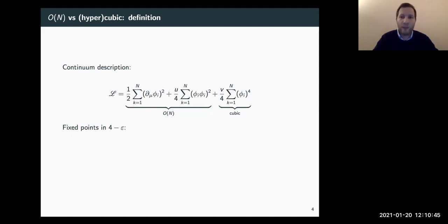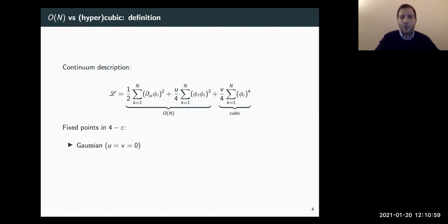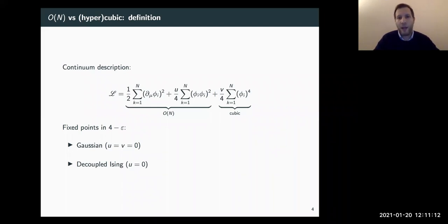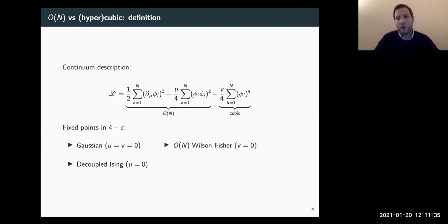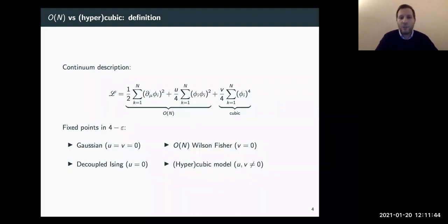If you go to a continuum limit or want to describe a quantum field theory in the same universality class, you write a Lagrangian with the usual O(N) Lagrangian plus a cubic interaction — a sum of phi_i to the fourth power, summing over components. You then study the phase space of this model to understand what infrared behavior to expect. In 4 minus epsilon, with two couplings, there will be different critical points: the Gaussian (always unstable), the decoupled Ising model (N copies), the Wilson-Fisher O(N) fixed point, and the hypercubic model where both couplings are non-zero with no enhanced symmetry.